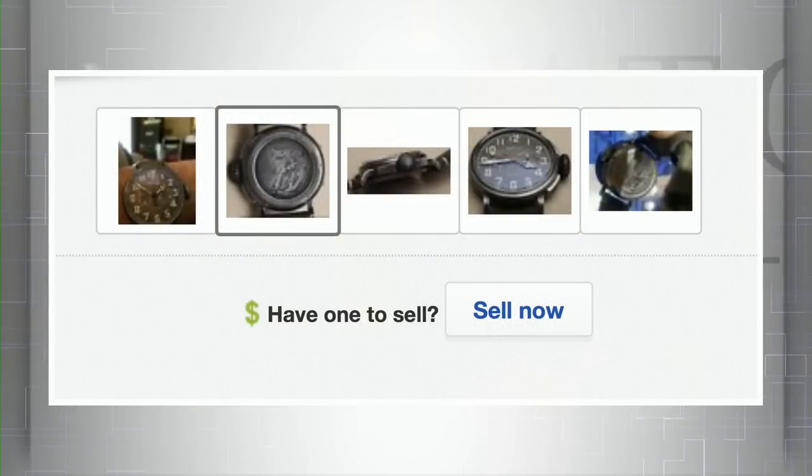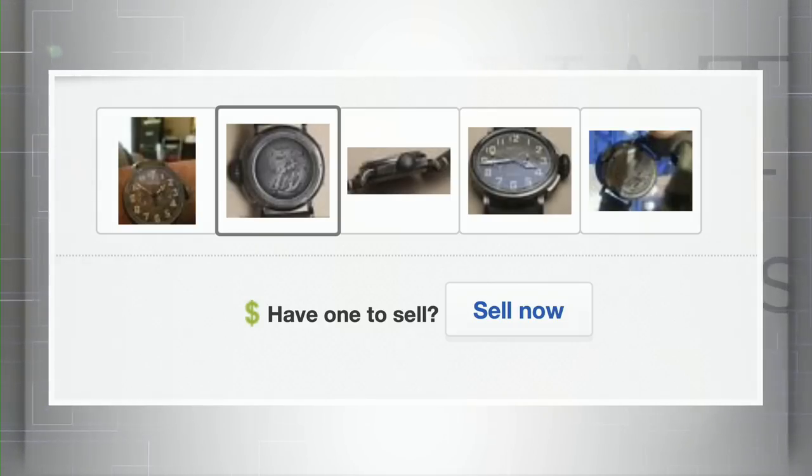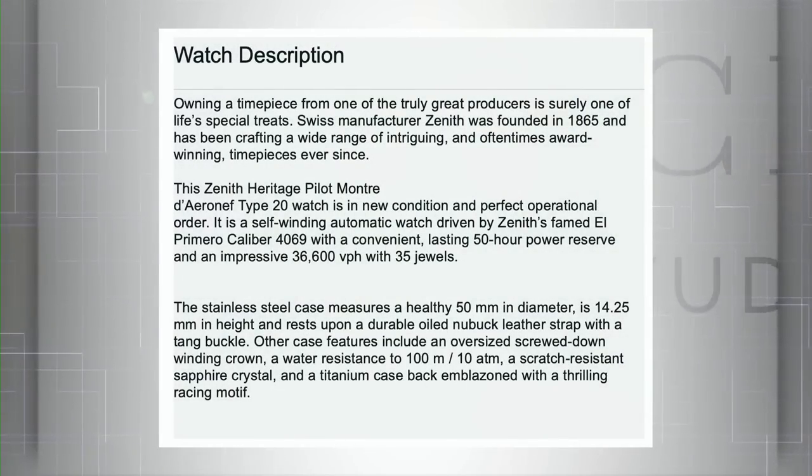This is a $7,100 retail timepiece being offered on eBay for $3,500. Too good to be true. Boxes, papers—who knows? The seller doesn't say. Usually you get a heads up that they're missing. Here, no details whatsoever.